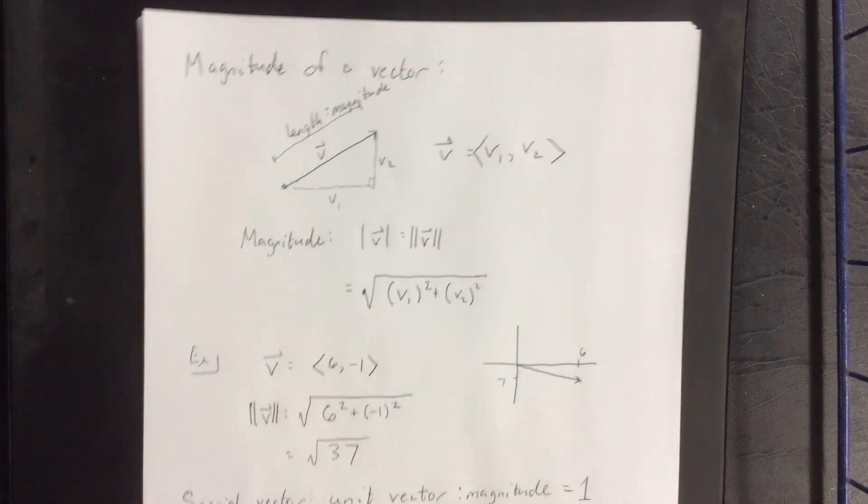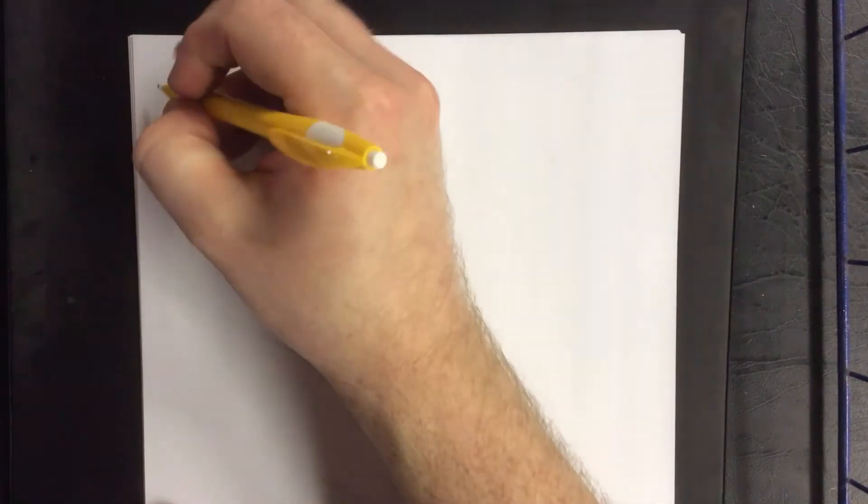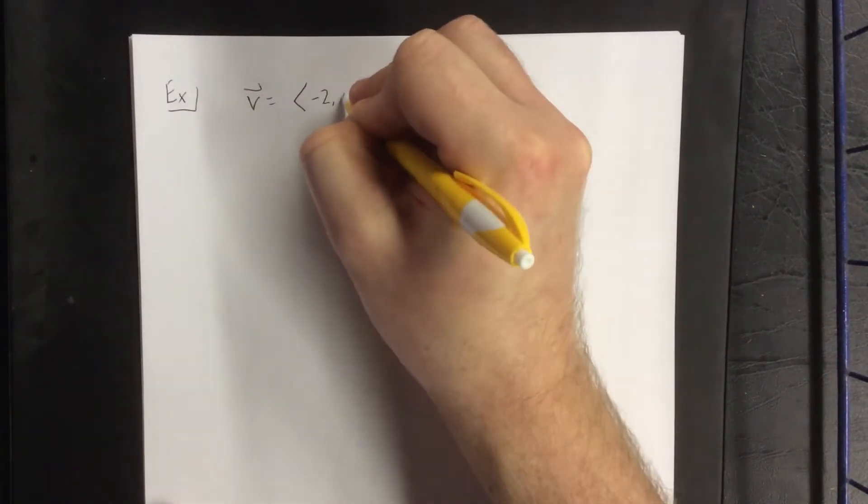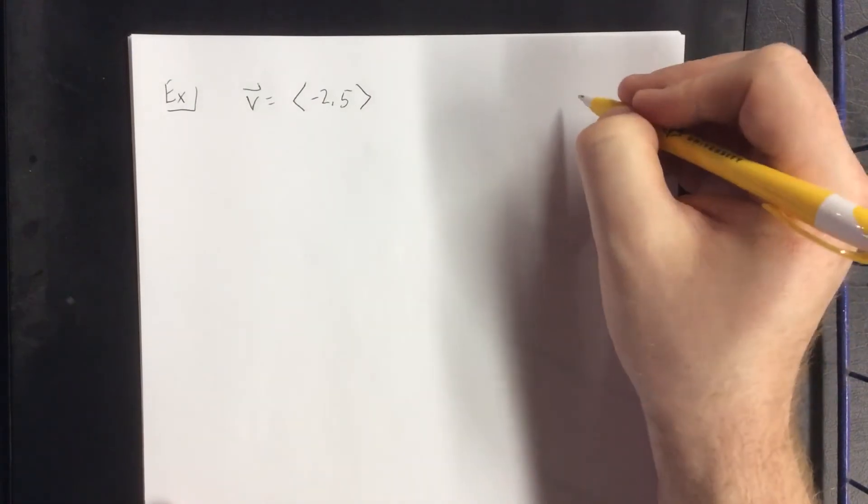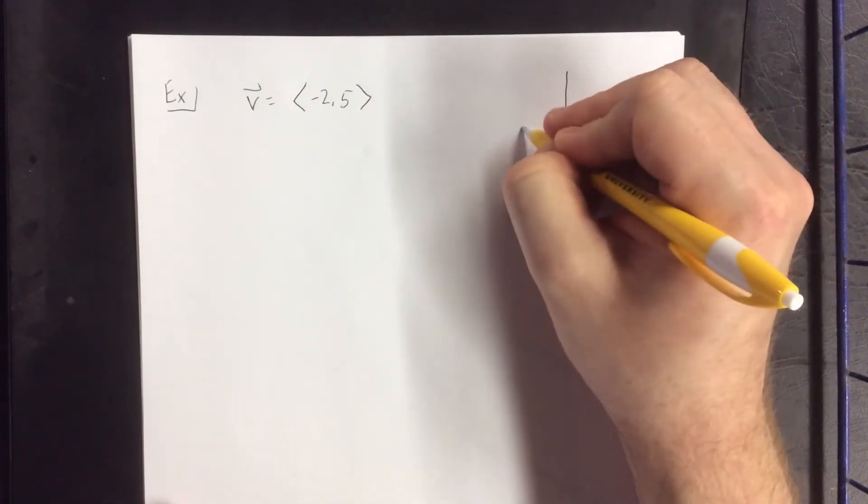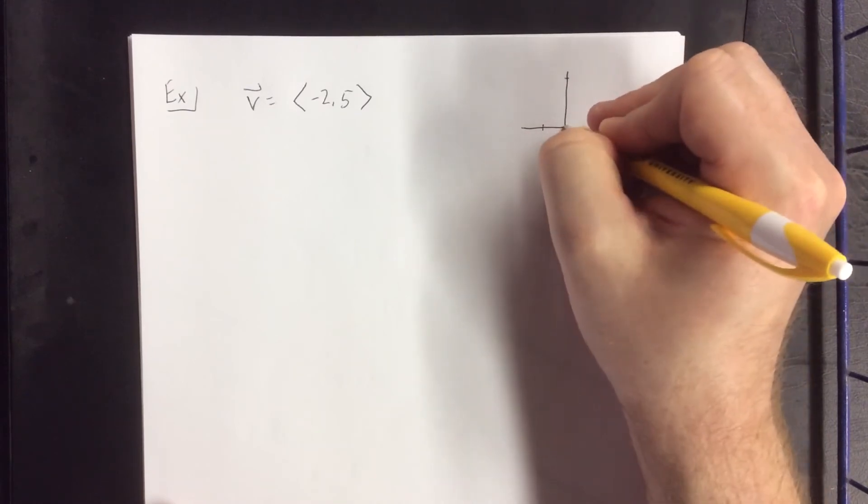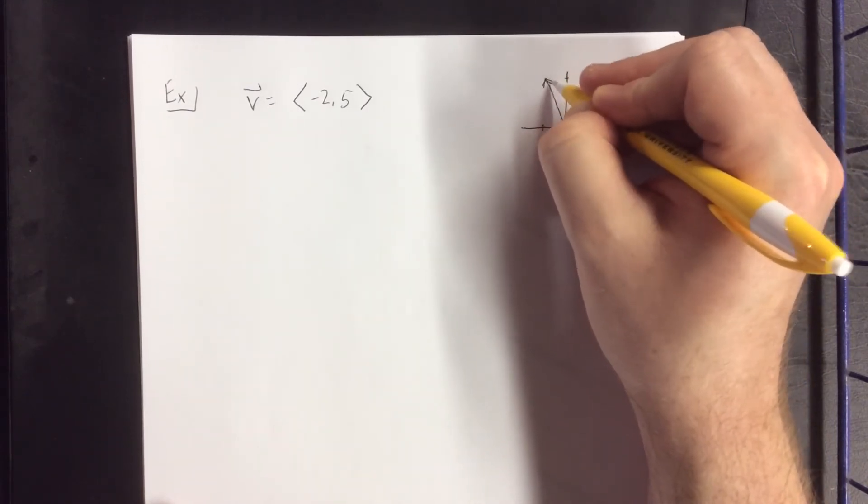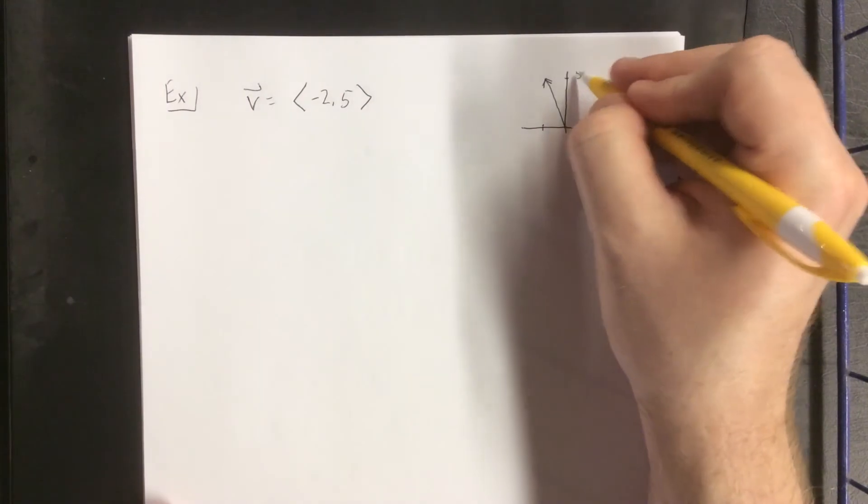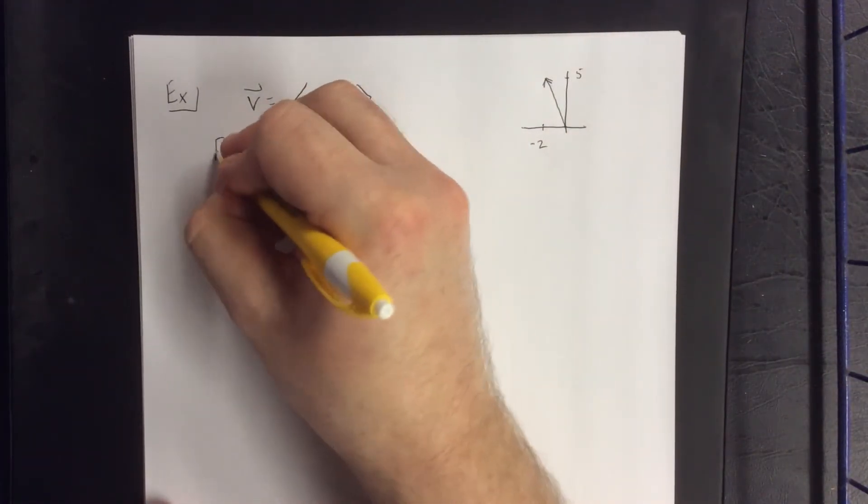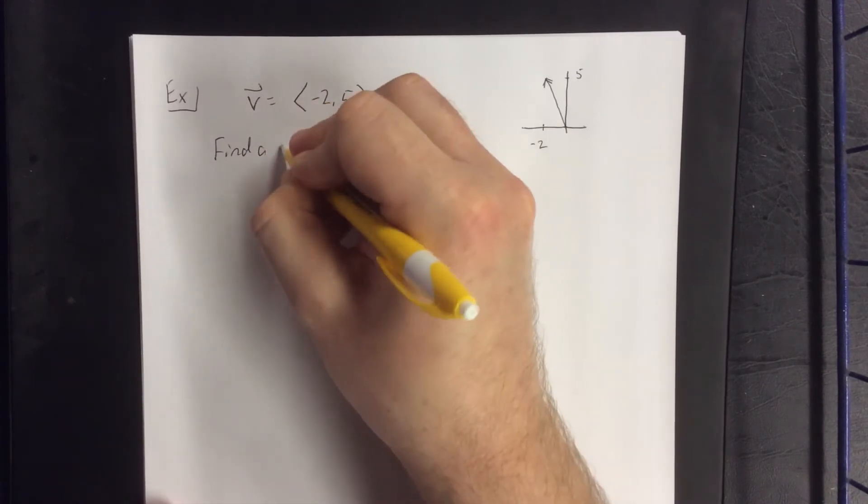For an example, consider the following vector: v = (-2, 5). This would be a vector that, if we draw the initial point at the origin, extends 2 units in the negative x direction and 5 units in the positive y direction.